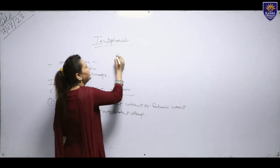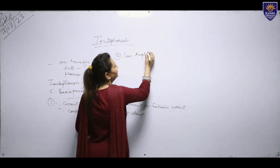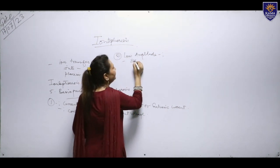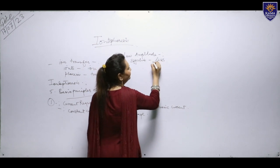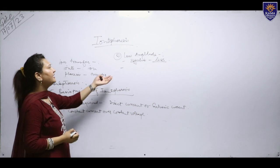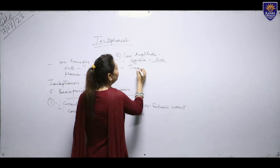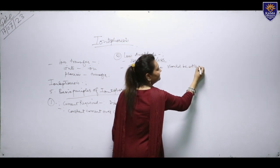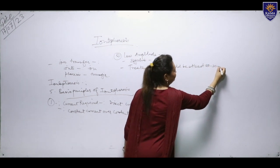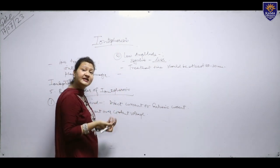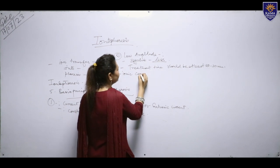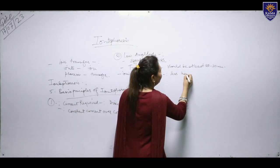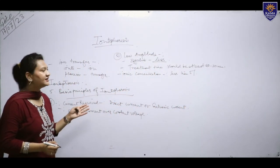The second basic principle is low amplitude. For low amplitude, it should be effective in nature. The treatment time should be at least 20 to 30 minutes, and the ionic concentration which we are using should be less than 5%. This was the second basic principle of iontophoresis.